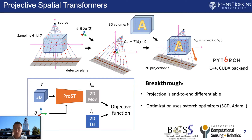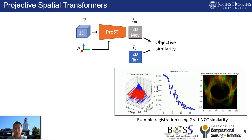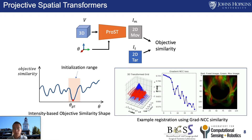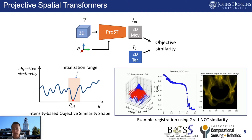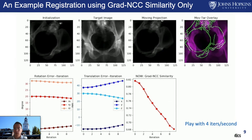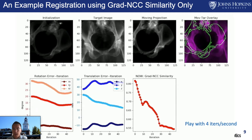We can take advantage of PyTorch built-in optimizers such as SGD or Adam to perform optimization over the objective function. We show an example 2D-3D pelvis registration using gradient NCC similarity, where the registration converges and the 3D transformed grid is displayed in 3D space. However, the problem of the narrow initialization range still exists, because the similarity is still the traditional gradient NCC-based loss function. If we initialize the registration with a larger offset, the registration easily gets stuck at a bad local minimum.